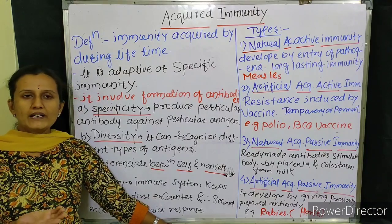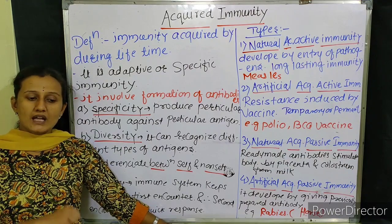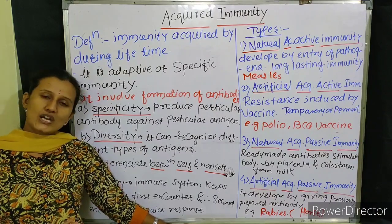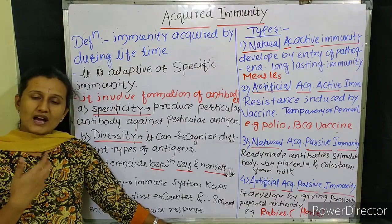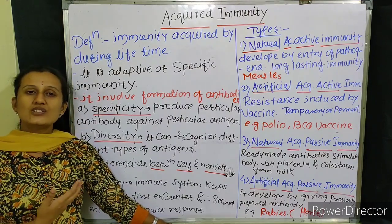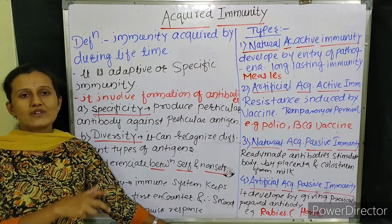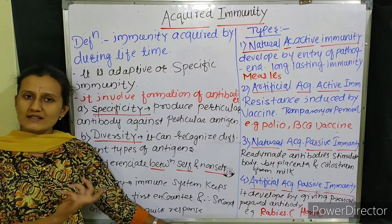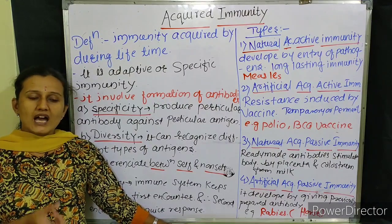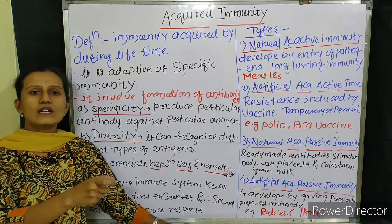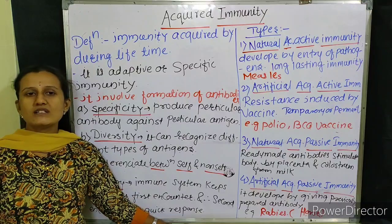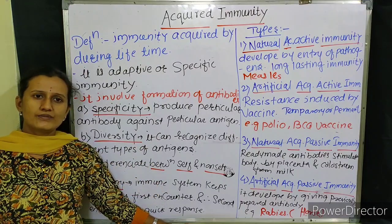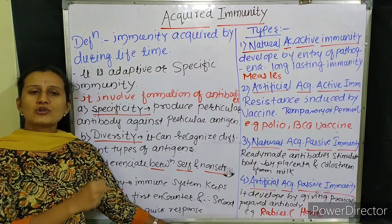When there is an infection of HIV virus, the body tries to produce antibodies but fails because the HIV virus's surface protein keeps changing. When there is a rhinovirus infection causing allergic rhinitis or cold, the body produces antibodies against it. So in acquired immunity, specificity means that whichever organism attacks, a specific type of antibody is produced against that specific organism.